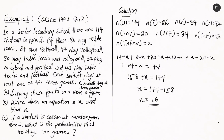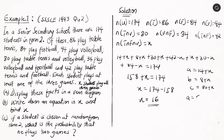Substituting X equals 16 back into our expressions: A equals 14 plus 16, which is 30. B equals 8 plus 16, which is 24. And C equals 30 plus 16, which is 46. These are the numbers of students playing only tennis, only football, and only volleyball respectively.